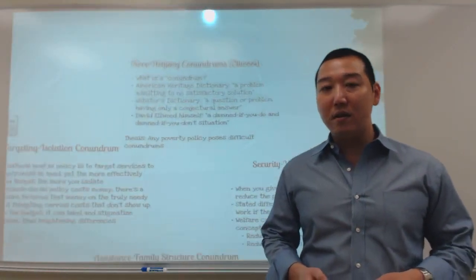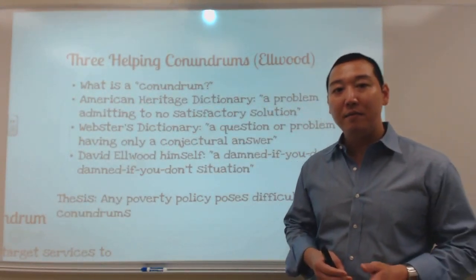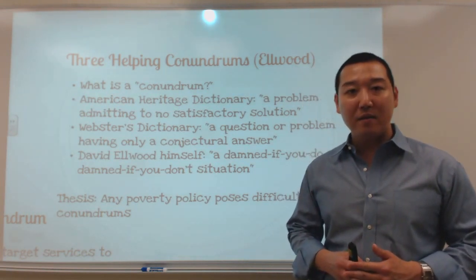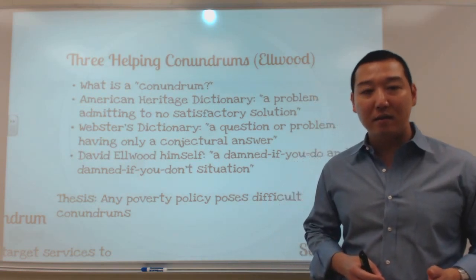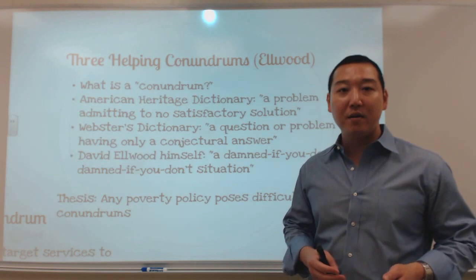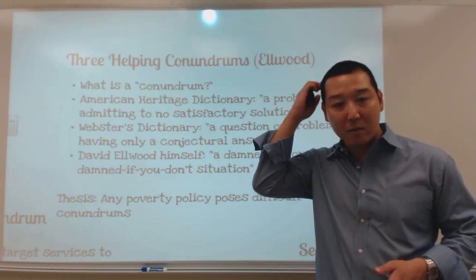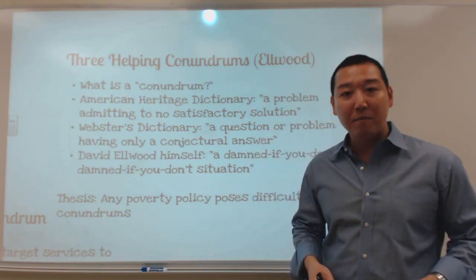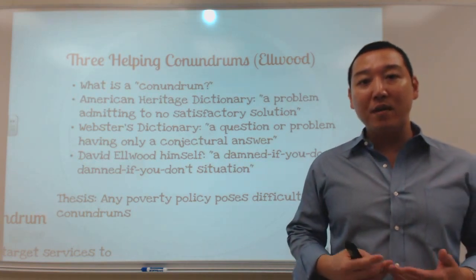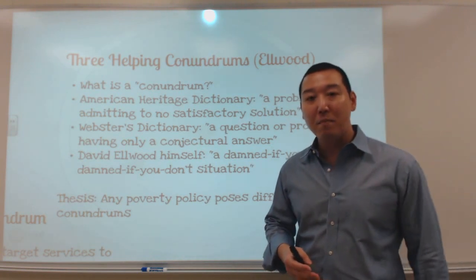So first, in the way of these helping conundrums — David Elwood is putting together multiple arguments about recurring themes in our poverty policy history. Government efforts over the years to address poverty seem to give rise to recurring issues that happen over and over. He notices three of these themes, which he calls helping conundrums.